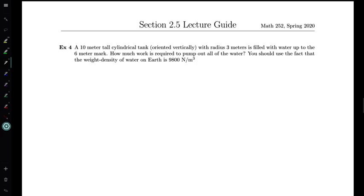So for example 4, we're looking at a 10 meter tall cylindrical tank oriented vertically. It's got radius 3 meters. It's filled with water up to the 6 meter mark. How much work is required to pump out all of the water? And we should use the fact that the weight density of water on Earth is 9,800 newtons per cubic meter.